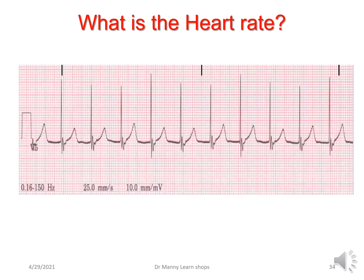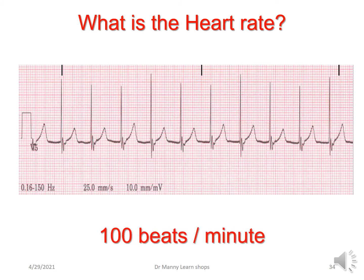What's the heart rate in this rhythm strip? Remember, you only count the complexes between the three lines — or in actual fact, the two outer lines, which is the six-second rhythm strip. The heart rate is 100 beats per minute because there are 10 cardiac cycles: 1, 2, 3, 4, 5, 6, 7, 8, 9, 10.